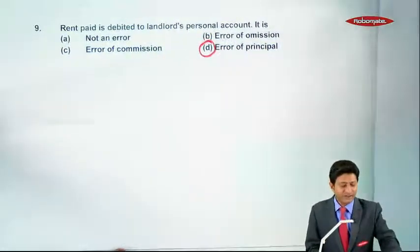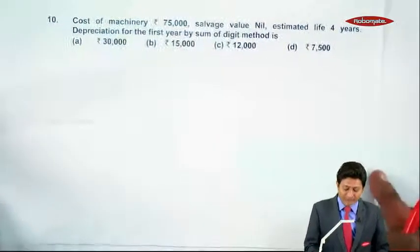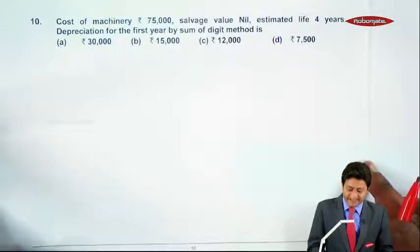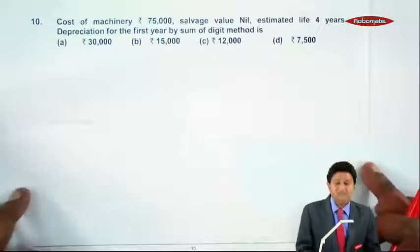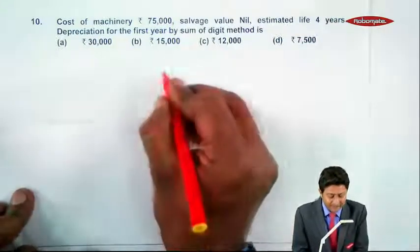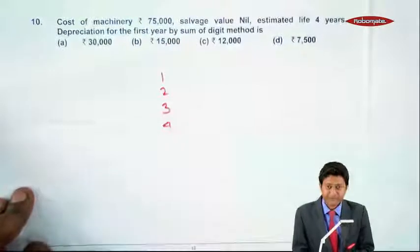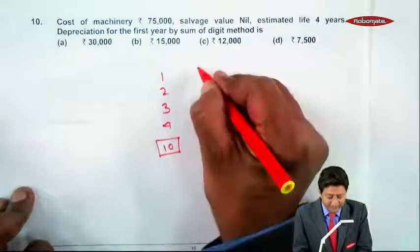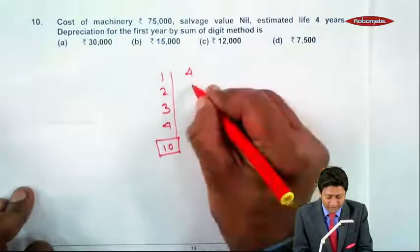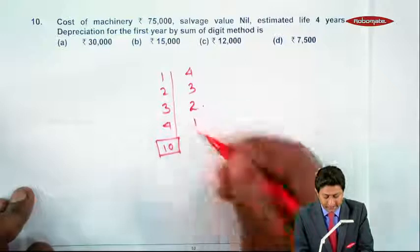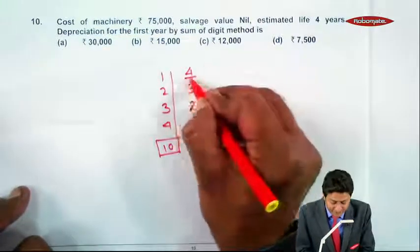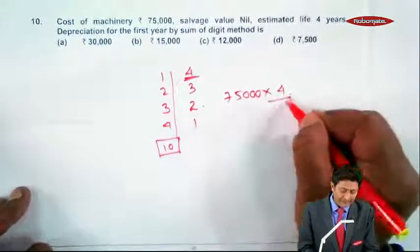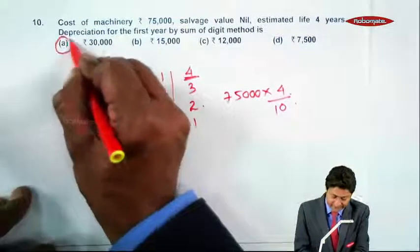Question 10: Cost of machinery is ₹75,000, salvage value is nil, estimated life is 4 years. Depreciation for the first year by sum of digits method. In sum of digits, first year, second year, third year, fourth year—year digits total: 4 plus 3 equals 7, plus 2 equals 9, and 1 equals 10. First year depreciation is 4/10, so ₹75,000 times 4/10 equals ₹30,000 depreciation for the first year.